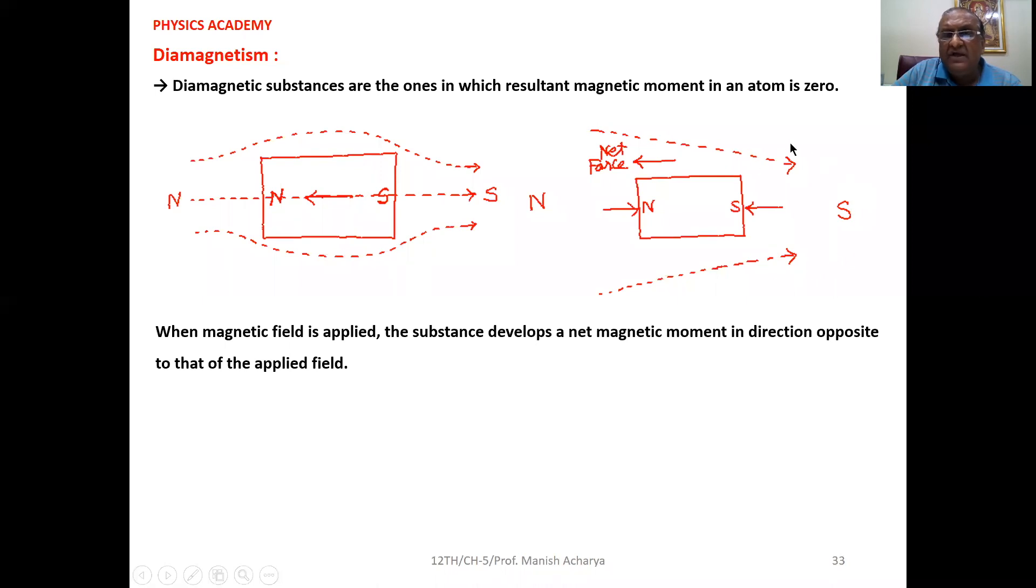This is the non-uniform magnetic field and here you can observe this thing. In this particular region, the magnetic field is strong. And in this particular region, the magnetic field is weak. The repulsive force on this side will be greater than the repulsive force on this side.